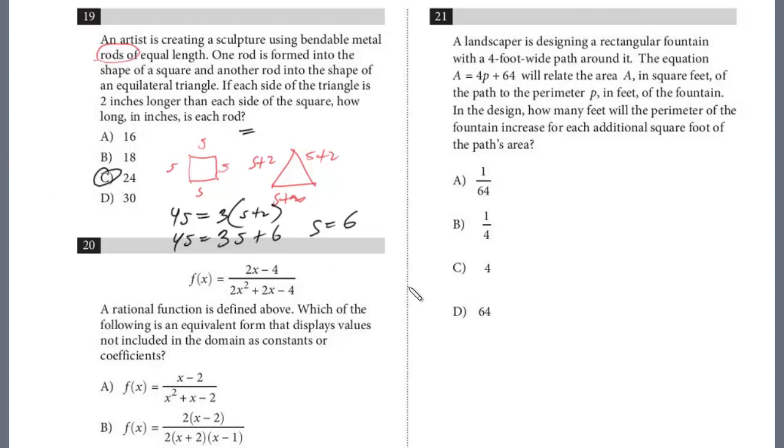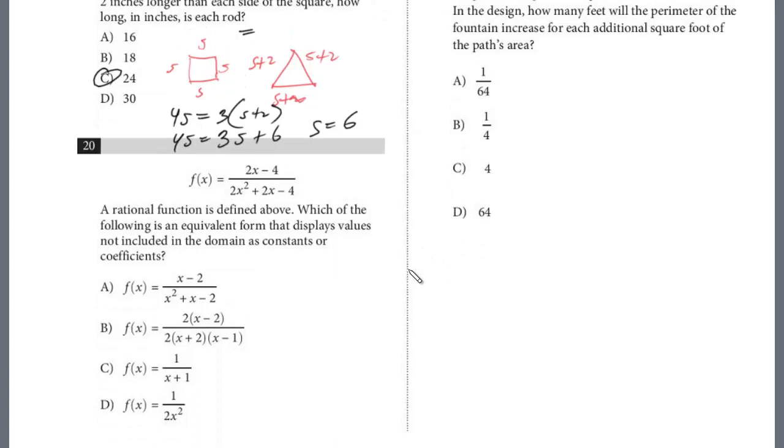All right, let's take a look at question number 20. A rational function is defined above which of the following is an equivalent form that displays values not included in the domain as constants or coefficients. This is really just understanding what they're asking for.